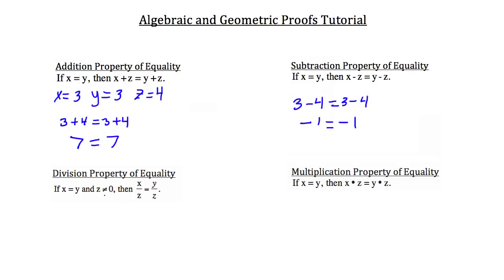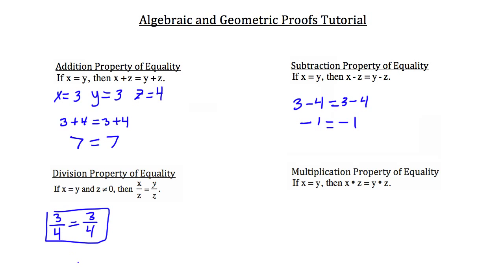The division property of equality states that if x equals y and z is not equal to 0, then x over z equals y over z. Using the same values: x, which is 3, divided by z, which is 4, equals y, also 3, divided by z, which is 4. That's true — they're equal, as they should be.